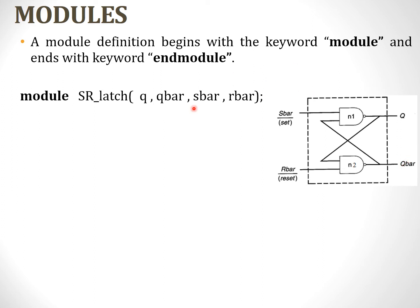In the first line, we do not declare input and output. Instead, we just list all the input and output variables. So we have Q, Q-bar, S-bar, R-bar as the terminal list — that is, the input/output terminals. We just have to list them, close the parenthesis, and end with a semicolon.